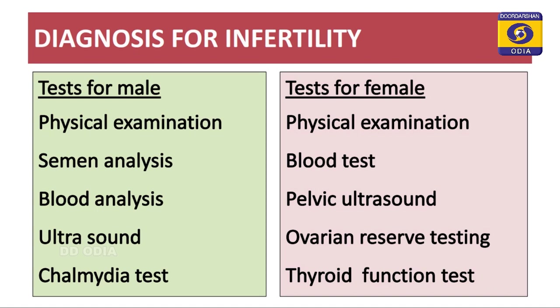For females, similar tests are advised: first and foremost, a physical examination by a gynaecologist to confirm all physical aspects are functional, then a blood test for hormone levels, a pelvic ultrasound to check the uterine cavity, cervix, and fallopian tubes, ovarian reserve testing, and thyroid function testing. These are the different diagnostic tests for infertility.